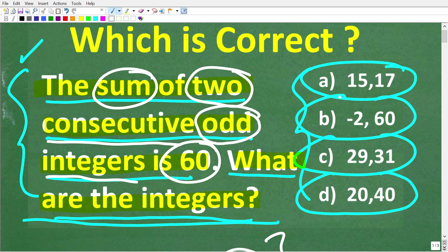So the sum of two odd numbers is 60. Let's go through our choices. So A, we have two odd numbers, but they don't add up to 60. B, we have even numbers, so we can get rid of those. And D, we have even numbers again. So the only odd numbers that add up to 60 is our choice C.